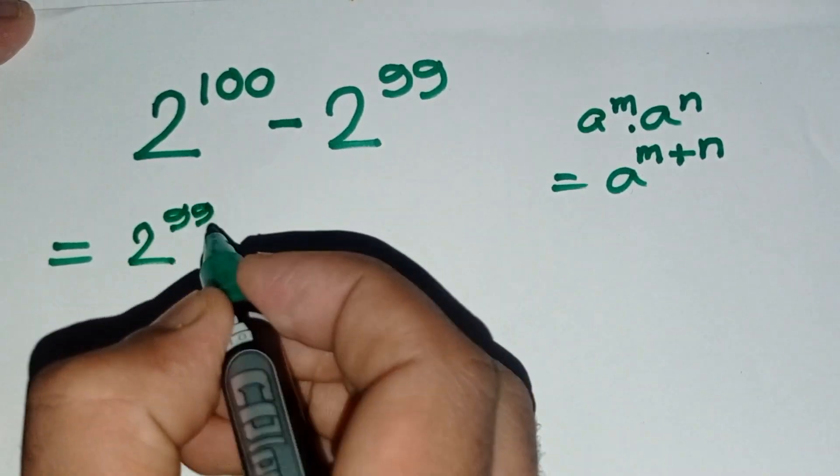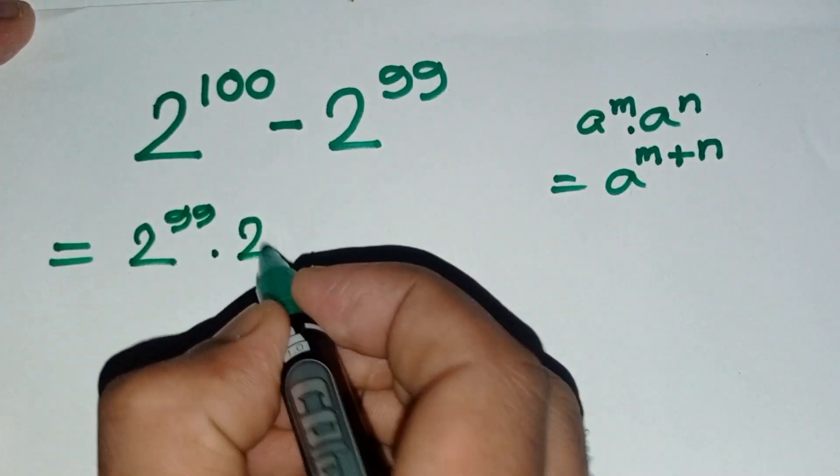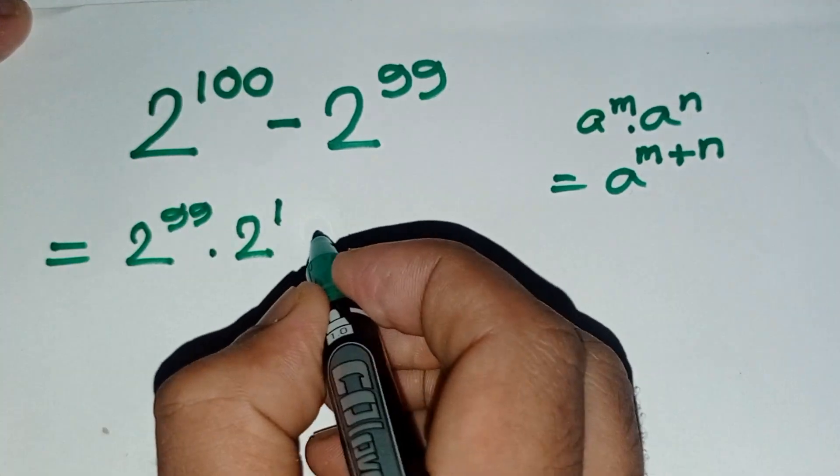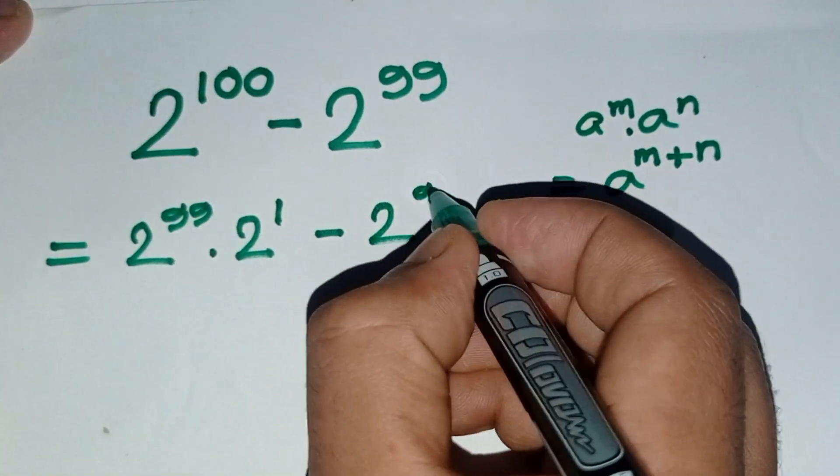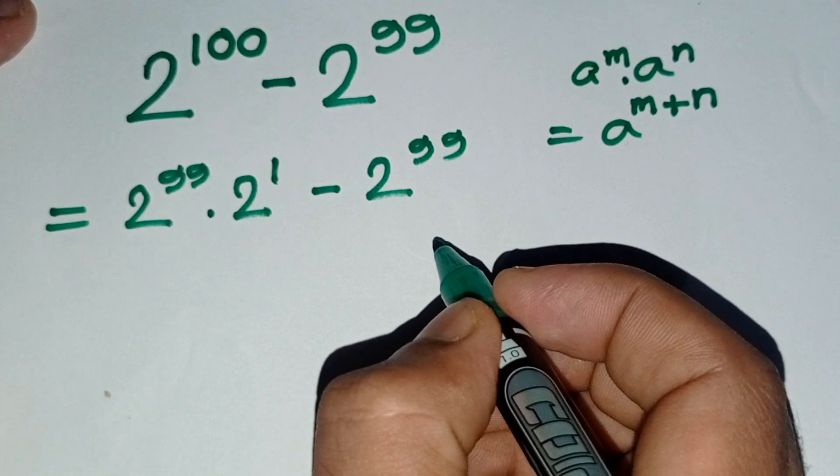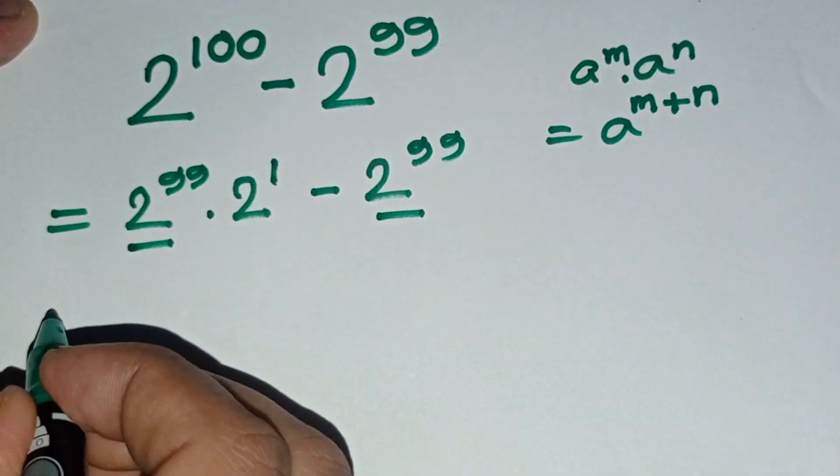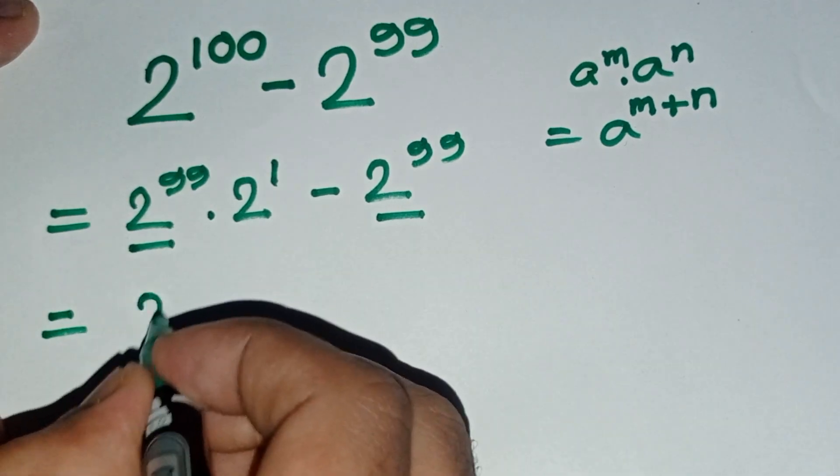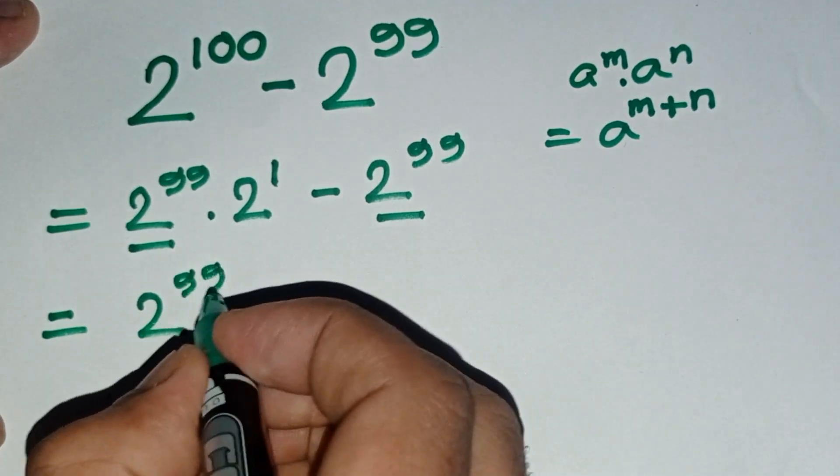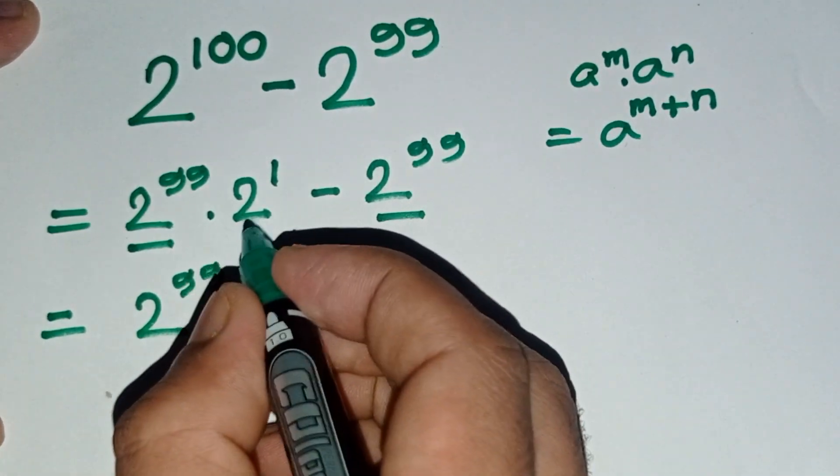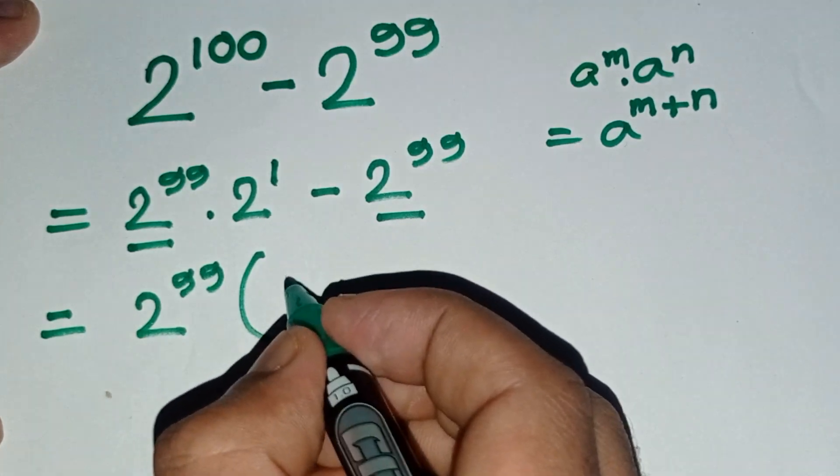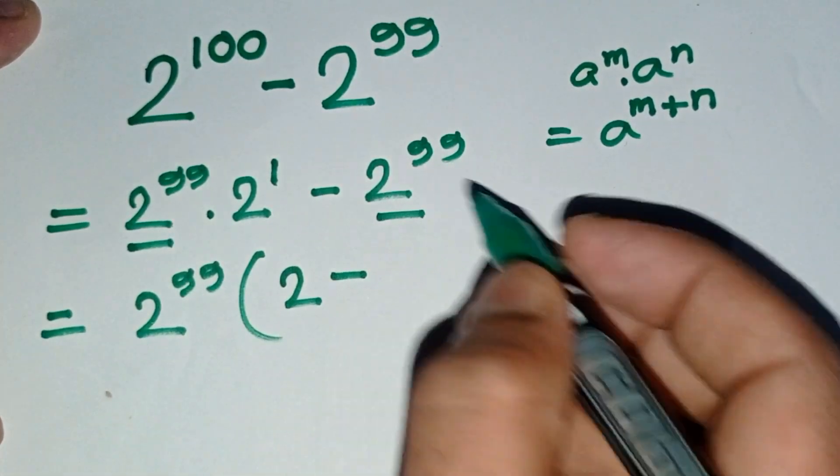Here 2 to the power 99 is common, so taking common 2 to the power 99. Here remains 2 to the power 1, which means 2 minus 1.